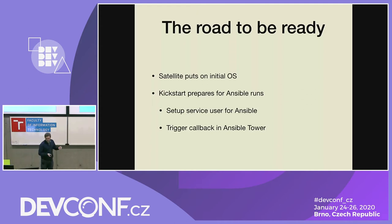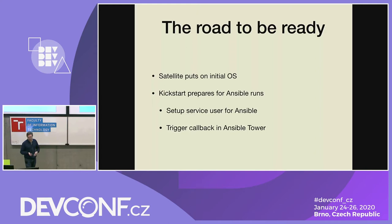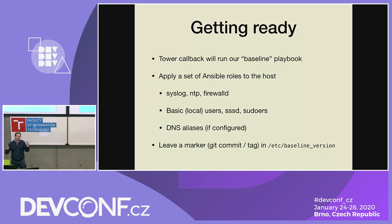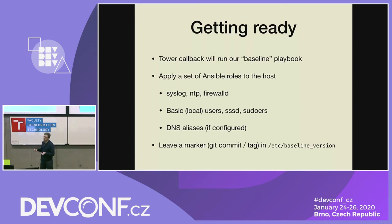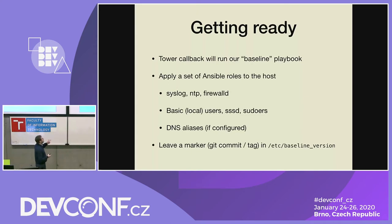At this point, we have an operating system running with packages installed. Kickstart triggered the Ansible run, and then Tower comes in and applies what we call our baseline playbook. This is, after the initial OS installation, a minimal set of configuration that we want to do on every host — no matter what that host will do afterwards. This concerns, for example, remote logging, NTP configuration, and usually a firewall configuration.